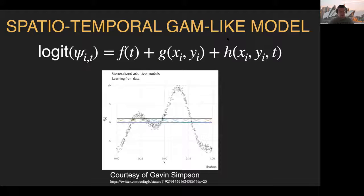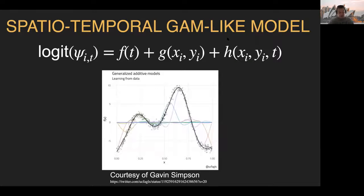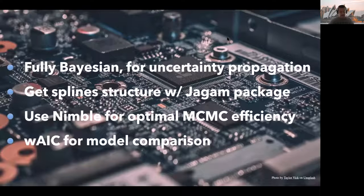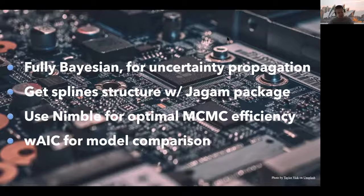In a nutshell, GAMs rely on splines, and splines are bits of lines or curves that are joined together based on the patterns in the data. Technically, we went fully Bayesian. We got the spline structure using the GAM package, NIMBLE for implementation, and WAIC for model comparison.